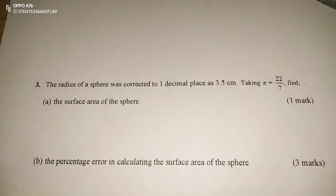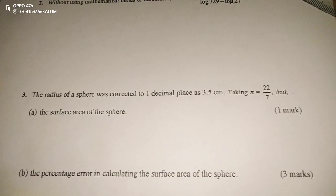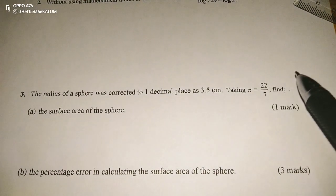The radius of a sphere was corrected to 1 decimal place as 3.5 cm, taking pi as 22 out of 7.